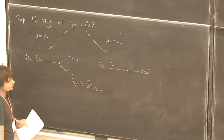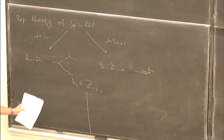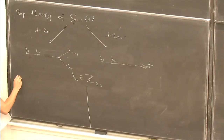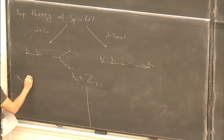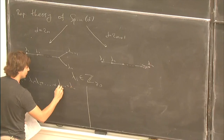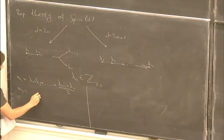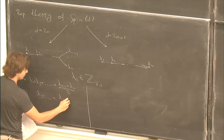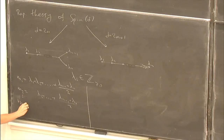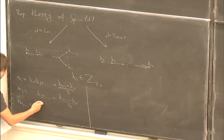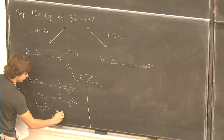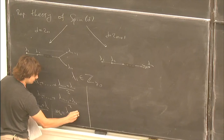It will be useful to do a different parameterization. Instead of using Dynkin labels, I will use something more similar to Young diagrams. We define integers M_i, and they are defined all the way down to M_{N-1}, which is M_{N-1} plus M_{N-1}, and then finally M_N equals M_{N-1} minus lambda_N. This is for the even-dimensional case; for odd dimensions it's very similar.